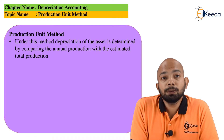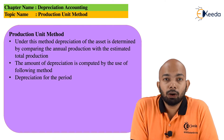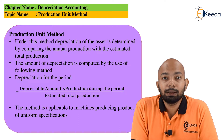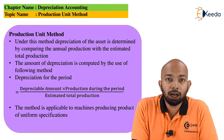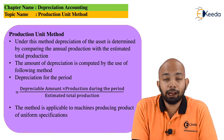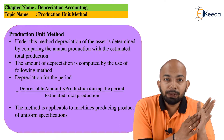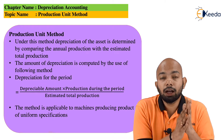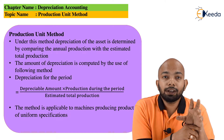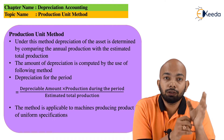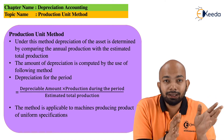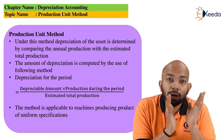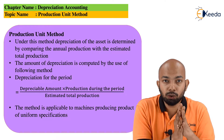When we speak about the Production Unit Method, we basically talk about its similarity with the Machine Hour Rate Method. Under the Machine Hour Method, depreciation is calculated as the number of hours divided by the total useful hours of that specific machine. Similarly, in the Production Unit Method, depreciation is segregated on the basis of the production that the machine can do.